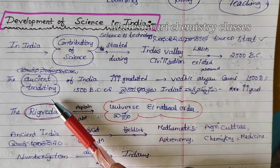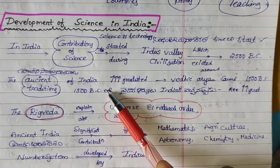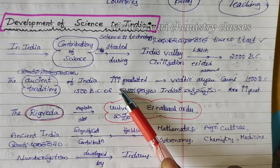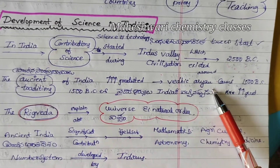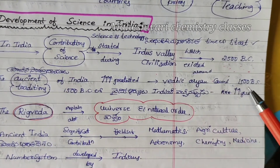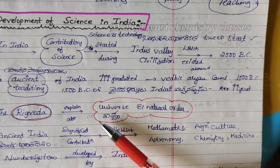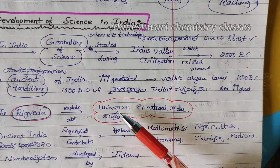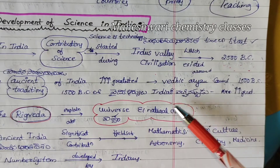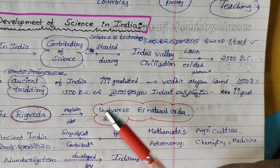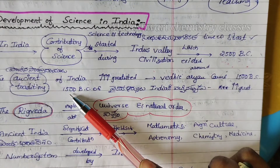The ancient traditions of India were given more importance. The greatest Vedic Aryan civilization came in 1500 BC. In the ancient traditions of India, science was deeply rooted.